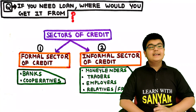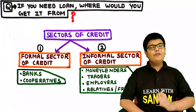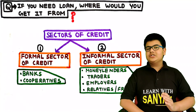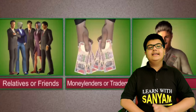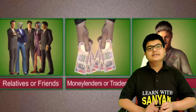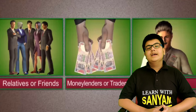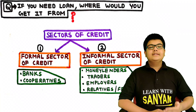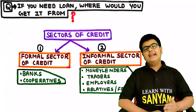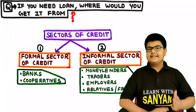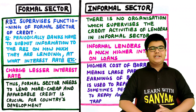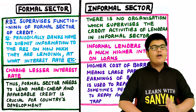If you need a loan, where would you get it from? There are two sectors of credit: the formal sector and the informal sector. The formal sector includes banks and cooperatives, while the informal sector includes moneylenders, traders, employers, relatives, and friends. Now let's differentiate between the formal sector and the informal sector of credit.